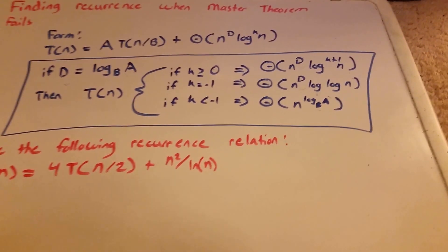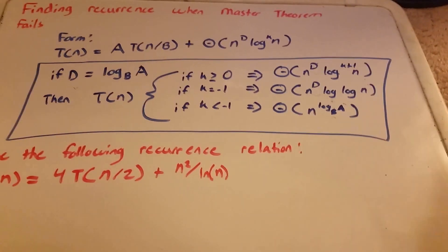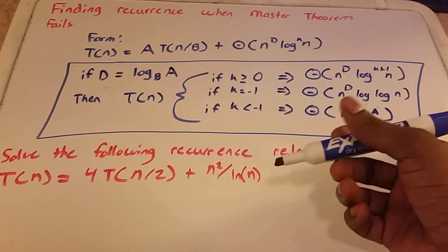Hey guys, this is a video on recurrence relations when the master theorem fails. So on some of my previous videos, I have the master theorem in a few examples.